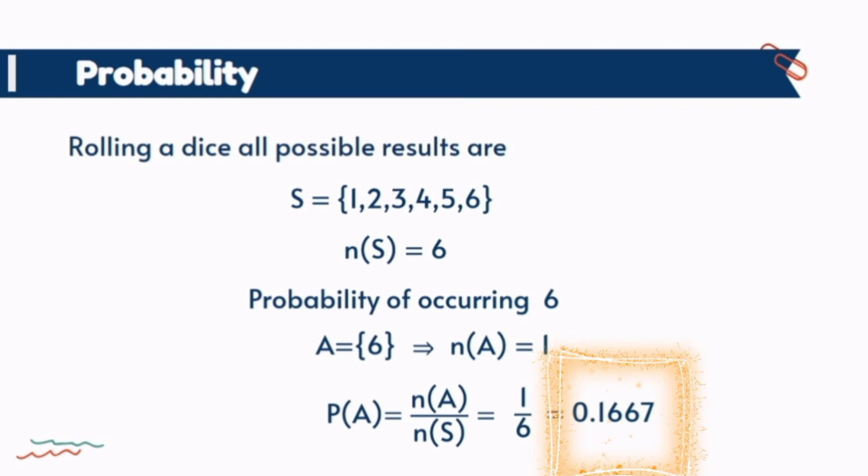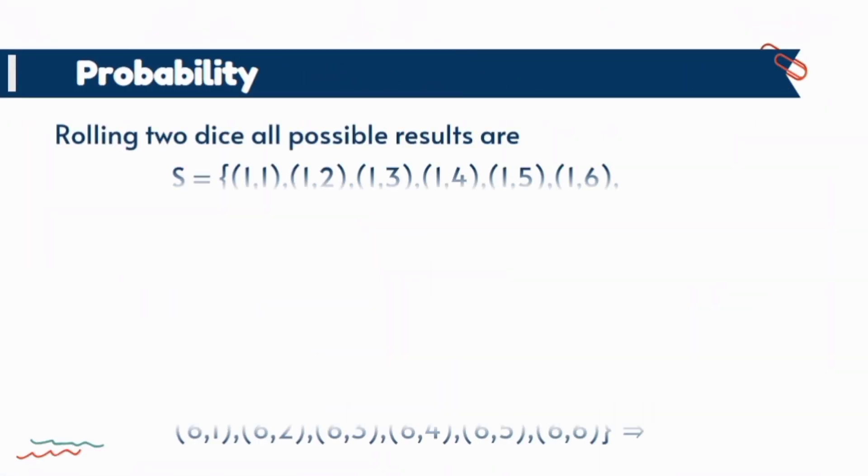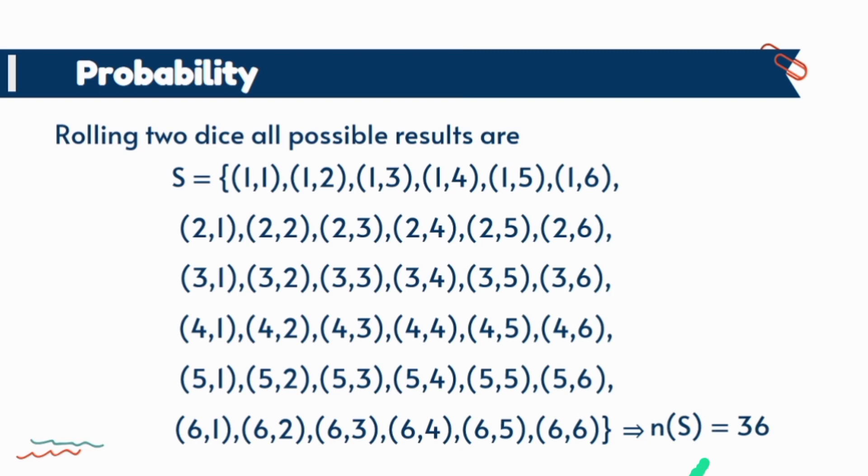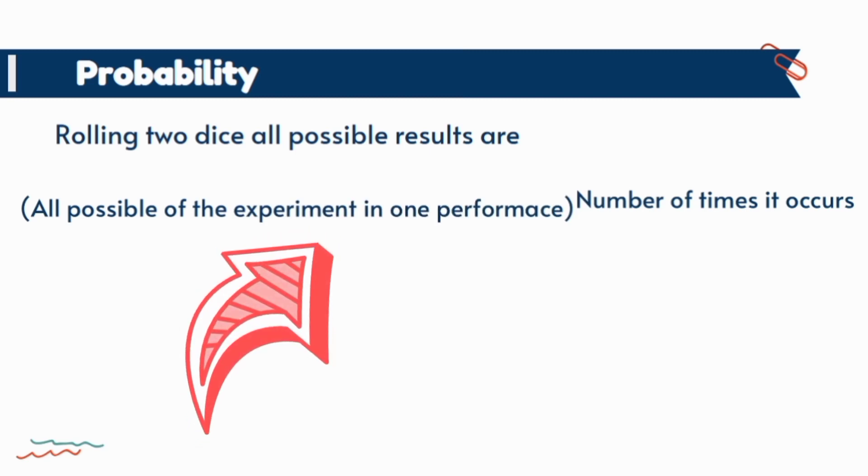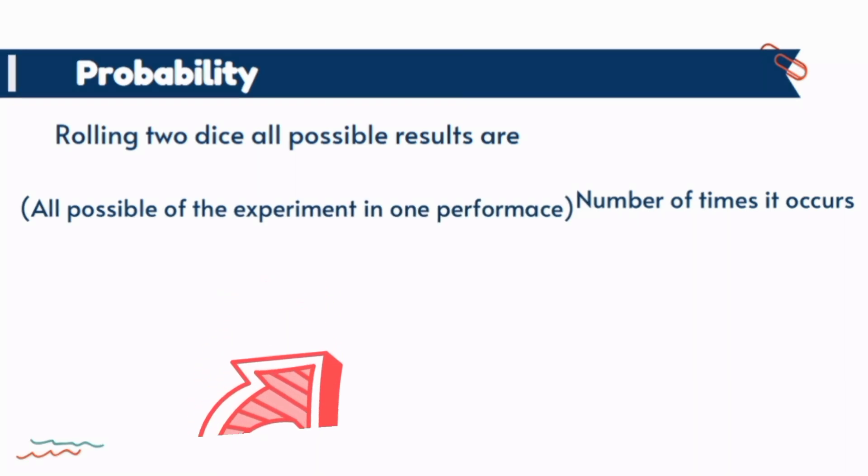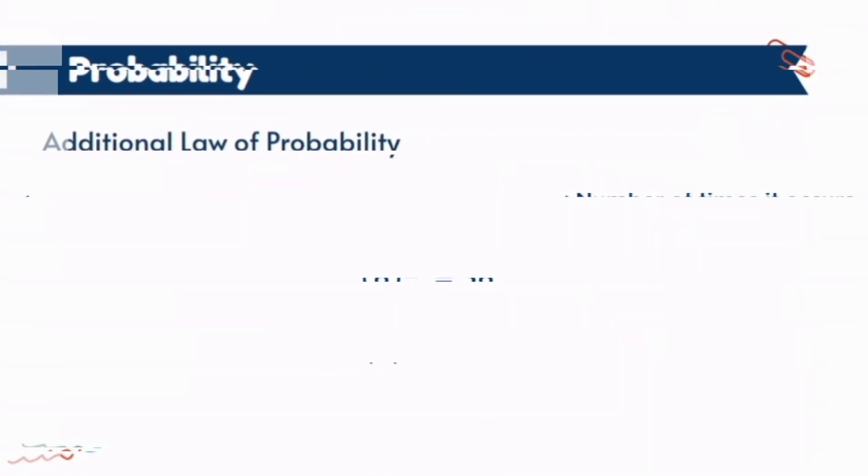Sample space for rolling two dice... and the number of sample points is 36. We use another method to count the number of sample points in sample space. We want to know that how many sample points when we roll two dice. Result is 36 sample points. Similarly when we roll three dice, in this situation the sample points are 216.